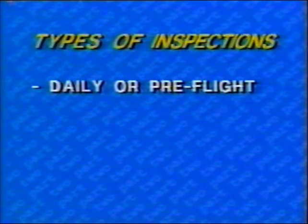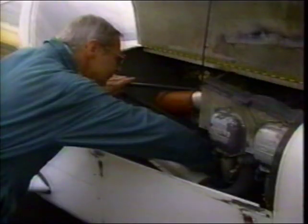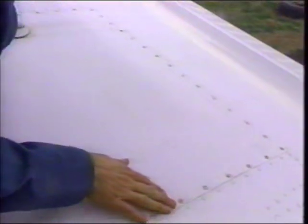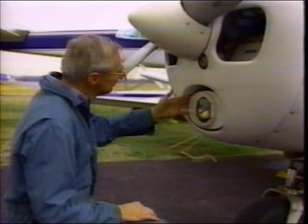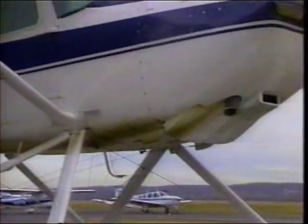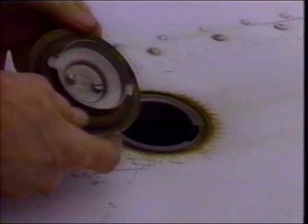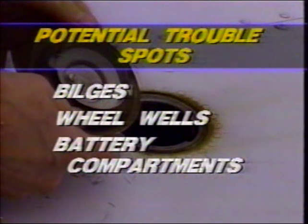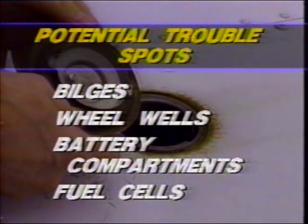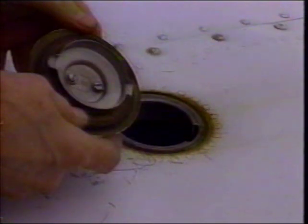As repetitive as they may become, the importance of daily and pre-flight inspections should never be forgotten. Always check engine compartments and the skin of the aircraft for missing or damaged paint and corrosion. Check all intake vents and engine frontal areas, and pay particular attention to exhaust trail areas, which are extremely corrosion prone. Potential trouble spots such as bilges, wheel wells, battery compartments, and fuel cell and cavity drains should be given special attention for signs of corrosion.